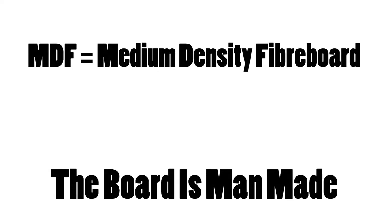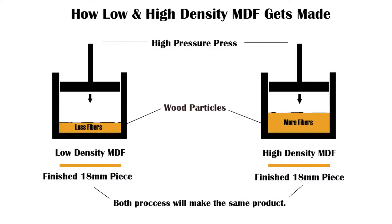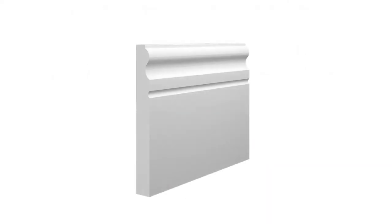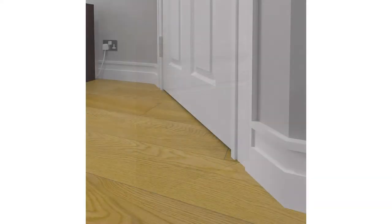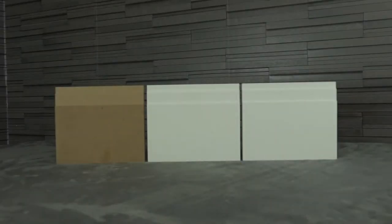MDF is a man-made material known as medium density fibre board. It is made up of many materials including softwood fibres and even recycled materials, which are then compressed in a crusher to form a wooden board. Unlike pine, there are no knots or imperfections, and MDF requires less time to prepare — all it needs is sanding down for smoothness and then primed ready for the final paint finish.